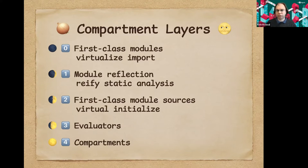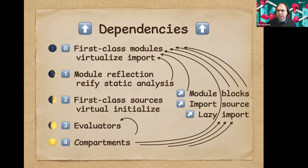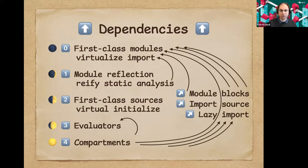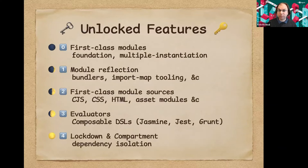Each of these layers has different motivating use cases and unlocks different usage of the module system, each of which might have different proponents. This allows us to build different coalitions around developing each layer. Not everybody is interested in all of these layers. There are some dependencies along these layers — it isn't strictly layered, and we don't have to get every single one into the language in order to make progress.